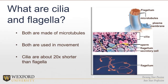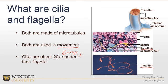Flagella, on the other hand — an example would be on sperm — the flagella allow movement, the swimming of the sperm. Being that flagella and cilia are used for movement, that should tell you right away that they are going to require energy. It's going to take energy to move these microtubules that make up the cilia and flagella, so you know this is going to require ATP.